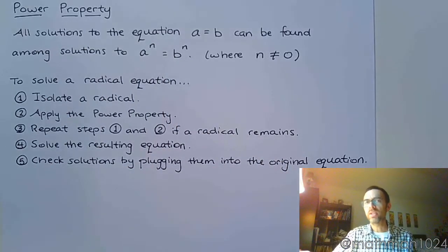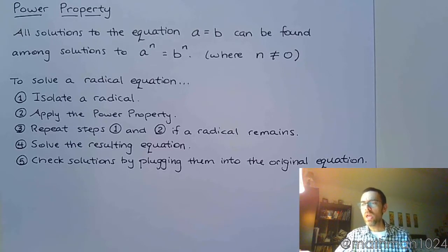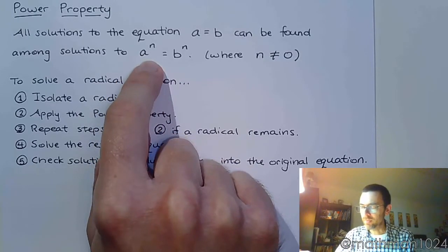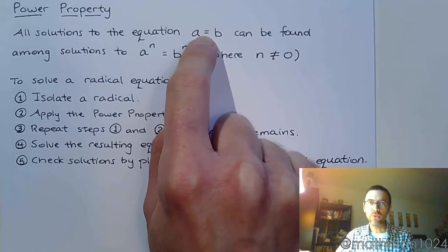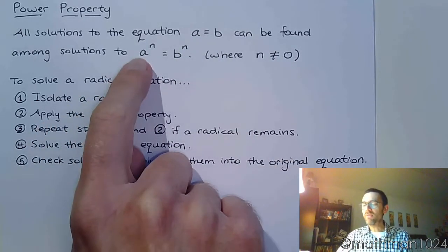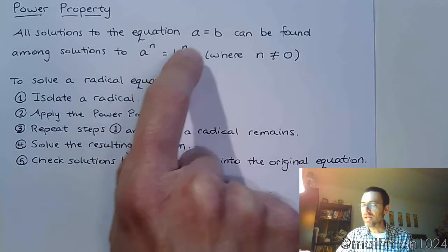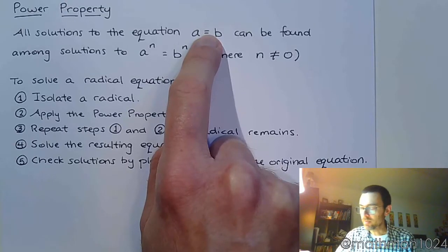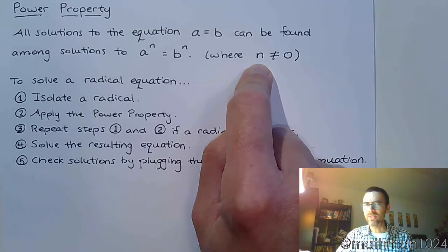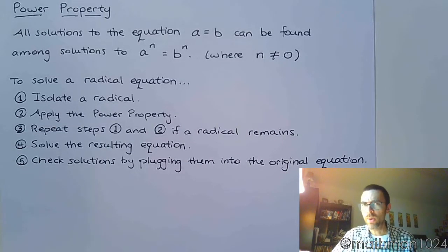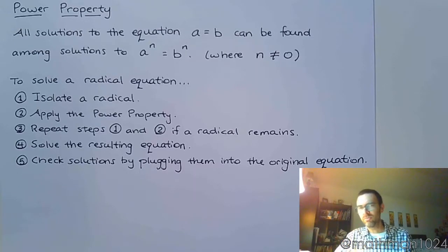Whatever equation you get from there, whatever solutions you get from this, it's going to have to contain any and all solutions for that original one. It doesn't say that every solution to this works, it just says if there are solutions to this, you can find them here. Obviously we're not going to raise both sides to the zero power because when you raise something to the zero power you get one, except for zero itself, but that's a weird little guy.